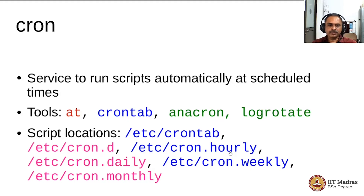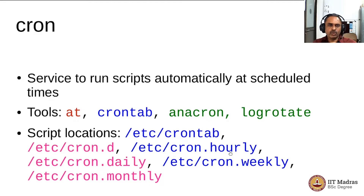There are some tools that enable a task to be executed at a particular time or at a recurring time, and also for the system to maintain itself. One such task is to rotate the log files, because log files tend to keep increasing in size as the system gets used. They need to be rotated, and many of these repetitive tasks are taken up by the cron system.